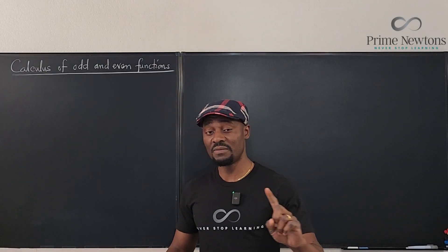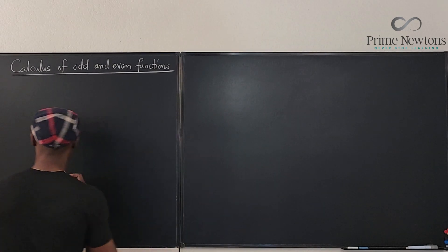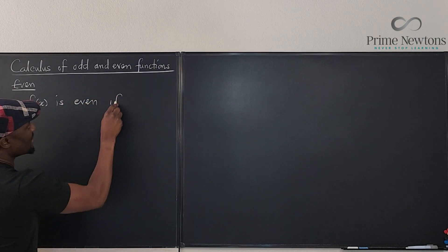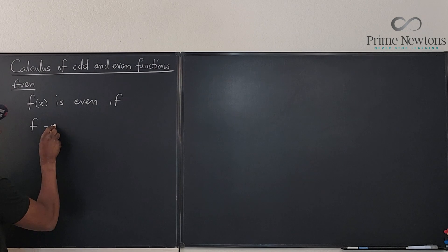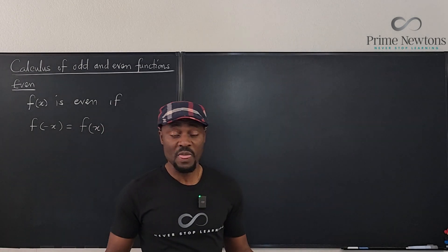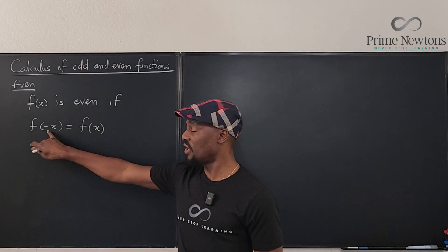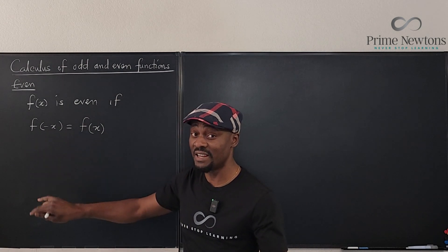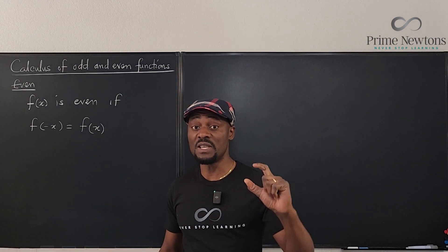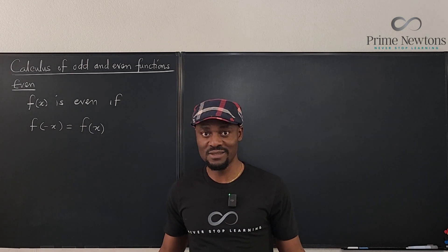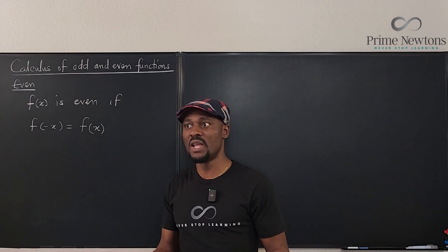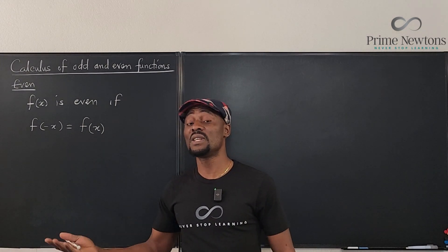Let's start with the definitions. A function is even if f of negative x is equal to f of x — that is the definition of an even function. A function is even if, when you change the input to the negative, you still get the same function. The simplest example of this is a constant. If f of x equals zero, then no matter what you do, you'll always get zero, and zero is an even function.